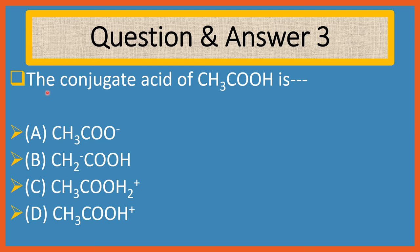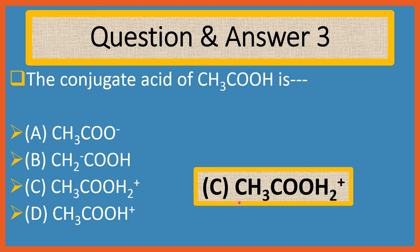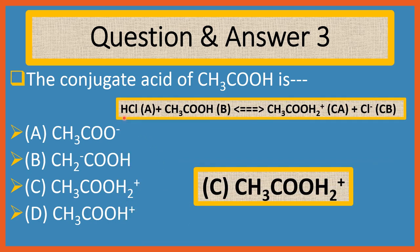Question 3. The conjugate acid of CH3CHO is. Choices are: A. CH3CO-, B. CH2-CHO, C. CH3CHOH+ (protonated), D. CH3CHO+. Answer is C: CH3CHOH+. In the reaction HCl plus CH3CHO transfers to CH3CHOH+ plus Cl-. HCl donates a proton; CH3CHOH+ is the conjugate acid of CH3CHO and Cl- is the conjugate base of HCl.